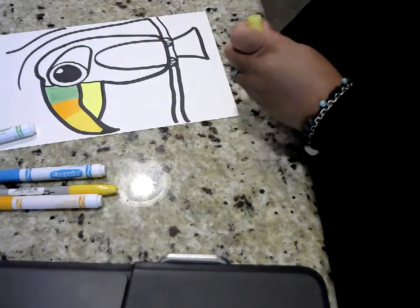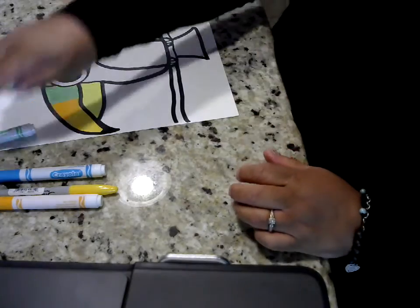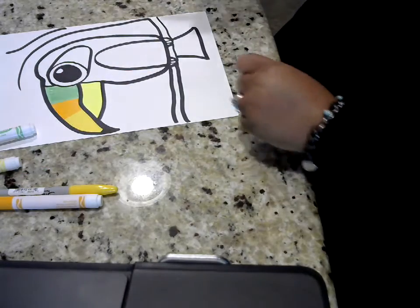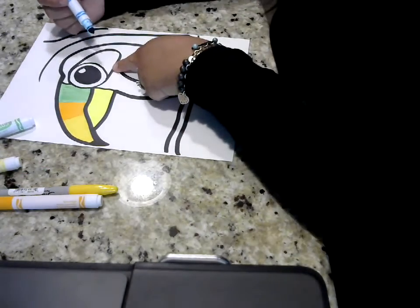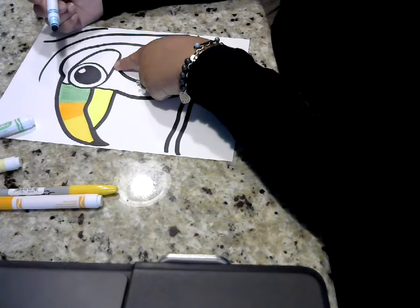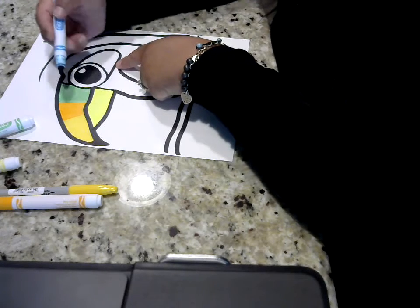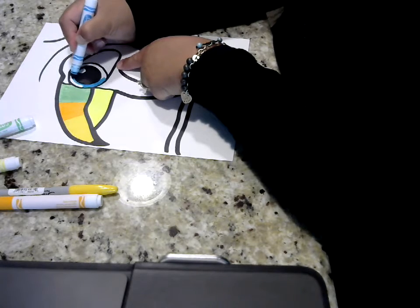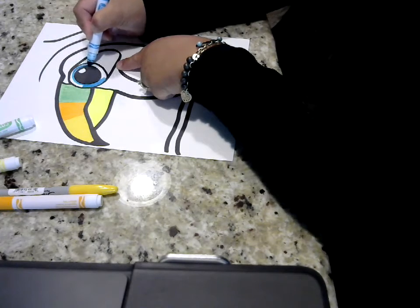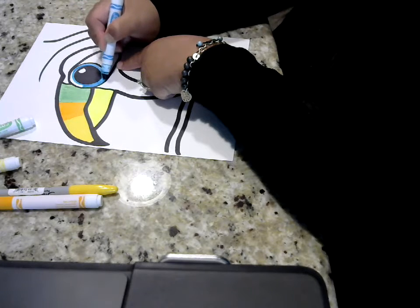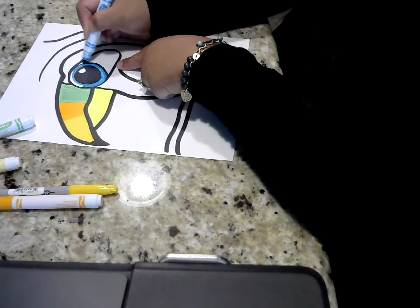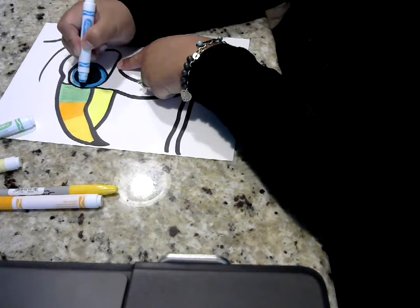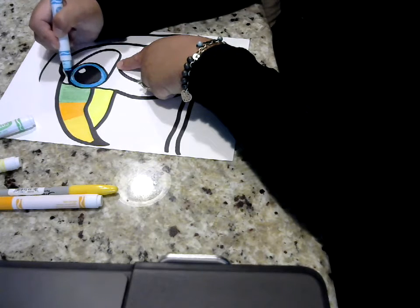So there's his beak around his eye here. I think we'll make this part, we could do this part like a blue color. So you color around here, this little white part that we left, that's the shiny part of your eye. So he's got nice, pretty blue eyes.